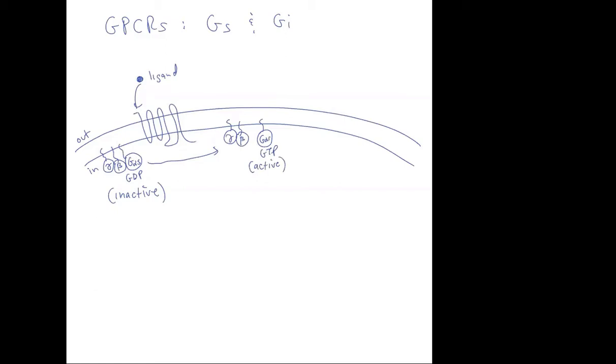When the G protein is active there's going to be a target enzyme and the target enzyme here is going to be an enzyme called adenylate cyclase, AC. Adenylate cyclase is going to make something called cyclic AMP from ATP. It's the G alpha S activated state that's going to turn on this enzyme adenylate cyclase.